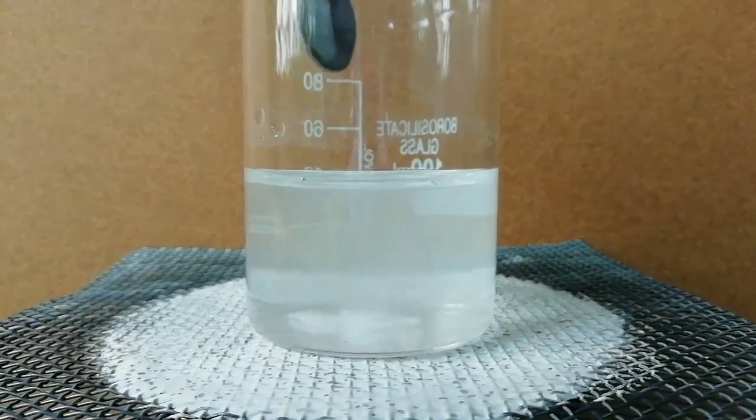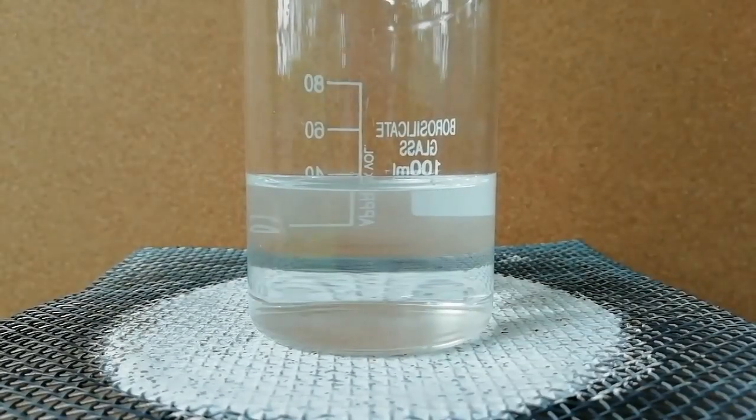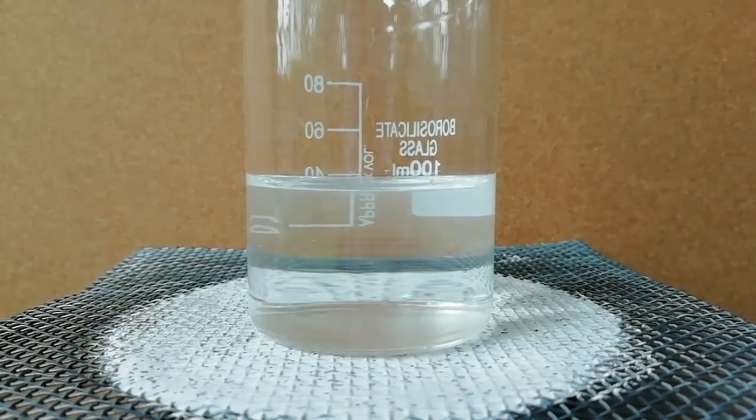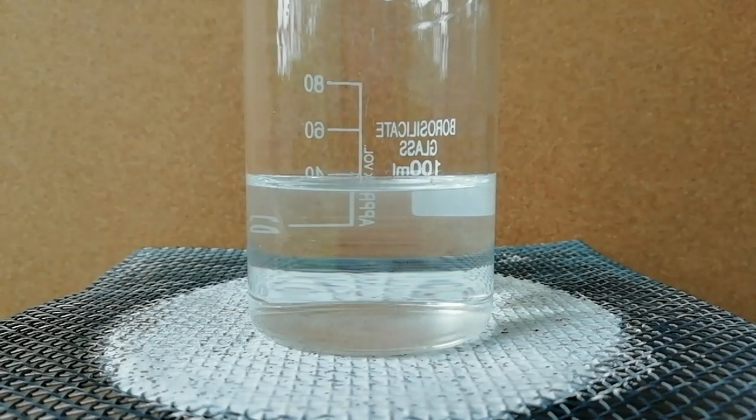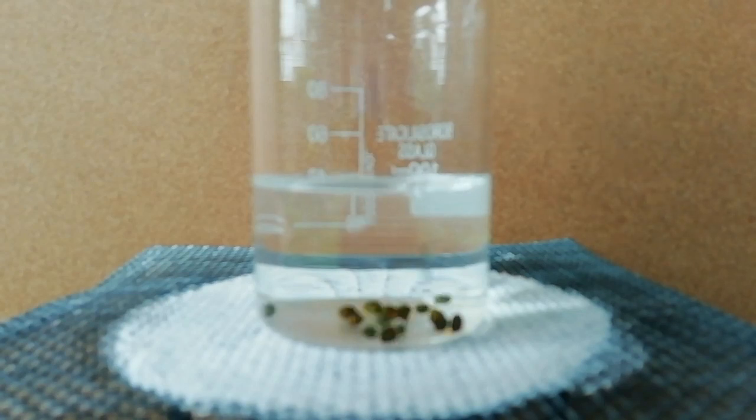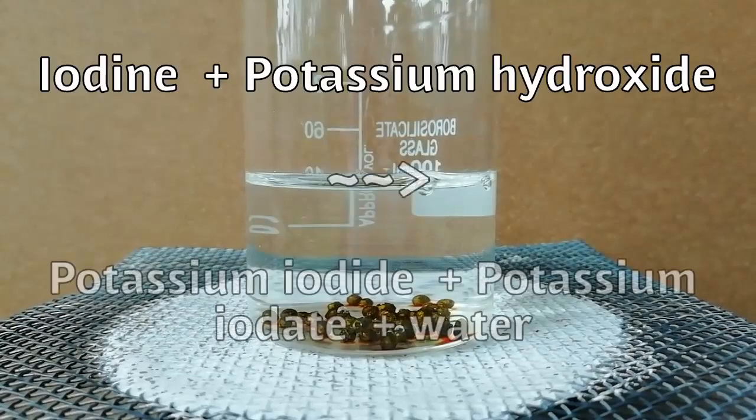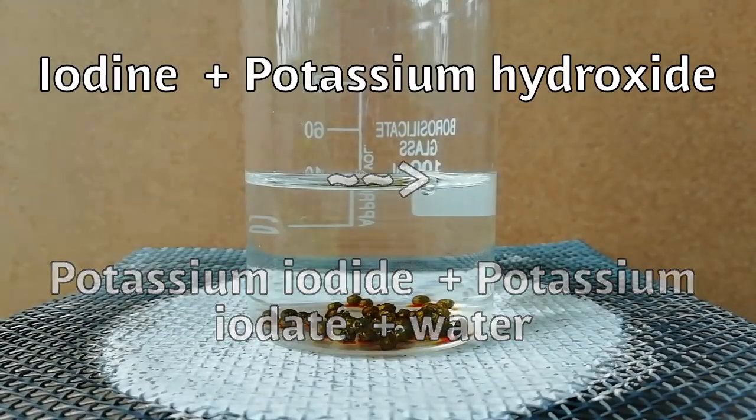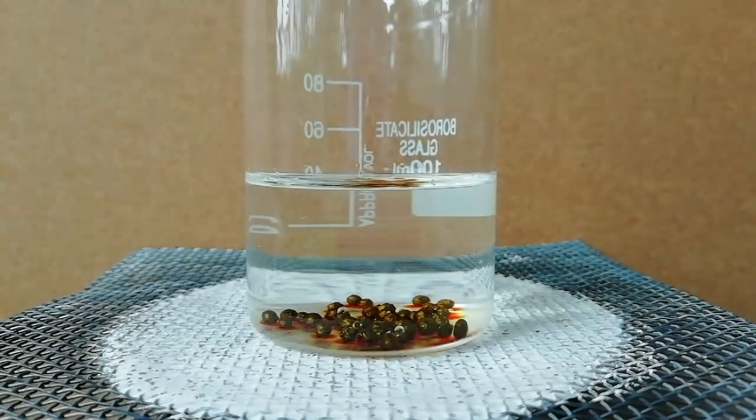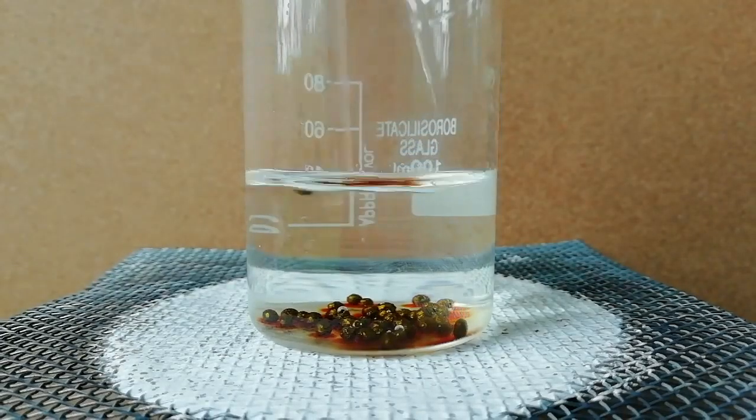Here potassium hydroxide reacts with iodine to produce potassium iodide and water. You can see when iodine dissolved in potassium hydroxide it turned into a slightly yellow color solution.